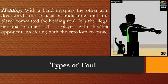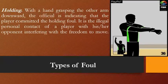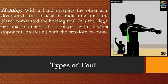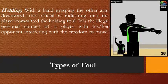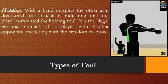Now for types of foul. The referee signals a clenched fist — not an open palm — to indicate a foul committed by a defensive or offensive player. The first is holding. With one hand grasping the other arm downward, the official indicates a holding foul. Holding is illegal personal contact with an opponent interfering with their freedom to move or impeding their progress. The referee raises the arm with a clenched fist, with the other arm straight — clenched fist at chest level — signaling the holding foul.